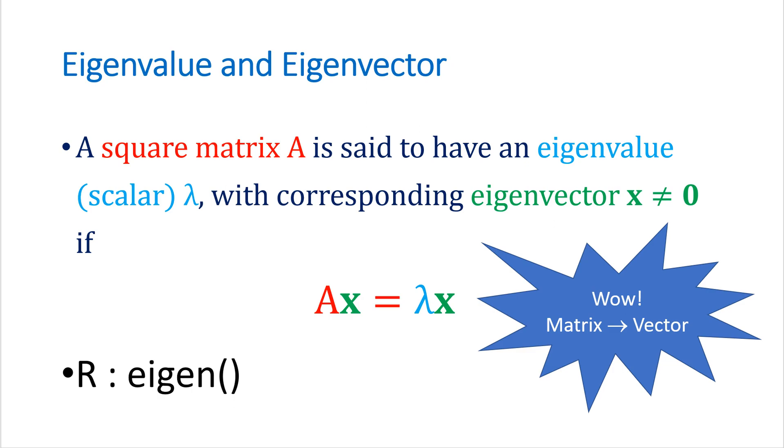Let's think about eigenvalue and eigenvector. A square matrix A is said to have an eigenvalue lambda with corresponding eigenvectors x not equal to 0 if it satisfies this condition.